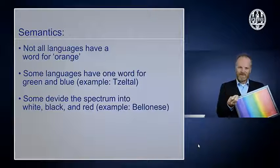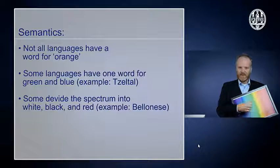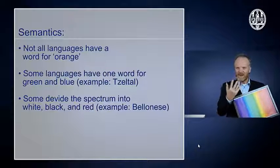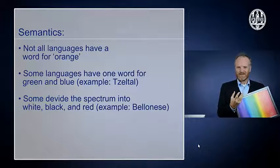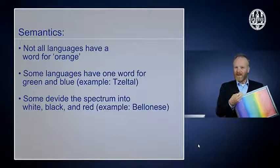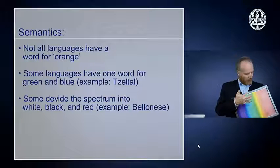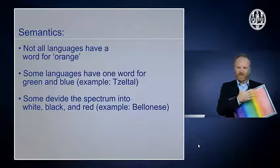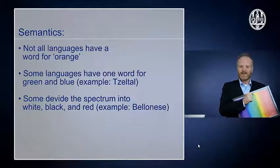In those three-color languages, there's something like white, something like black, and then typically something like red. The whitish word would cover all the clear colors, black would cover black and brown and in some languages also green, and red would cover orange and pink and red itself.